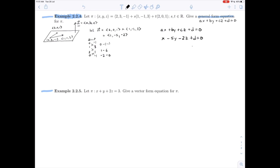To find the d we are going to plug in the known point that we have in the plane. So (2, 3, -1), and so we're going to get 2 minus 5 times 3 minus 2 times -1 plus d equals 0. And so what is this now? 2 minus 15 plus 2 plus d is equal to 0. So d is 11.